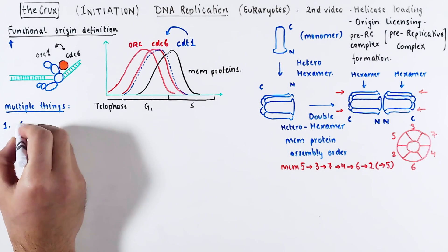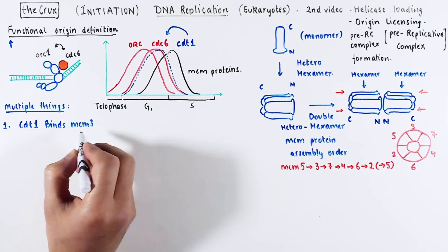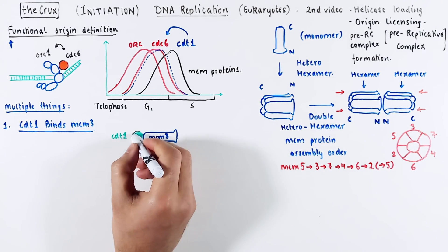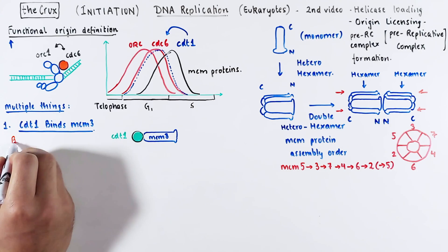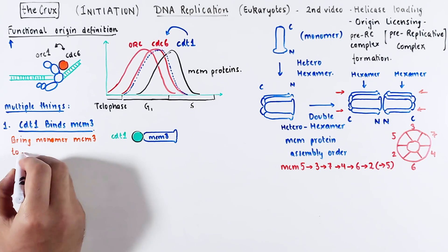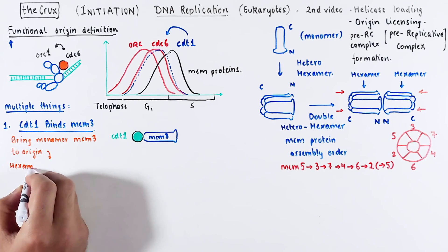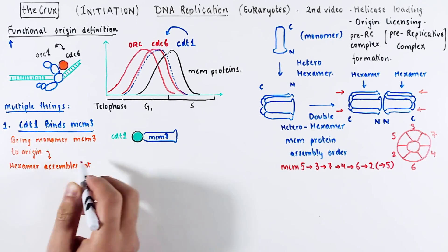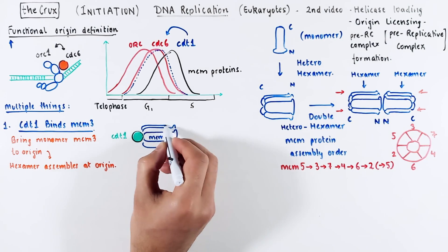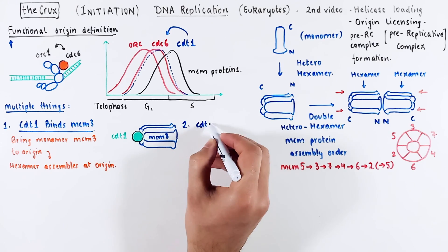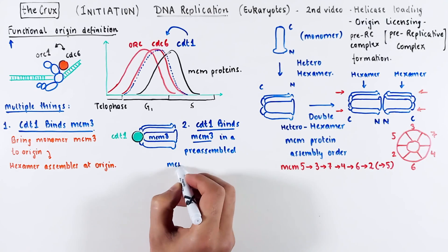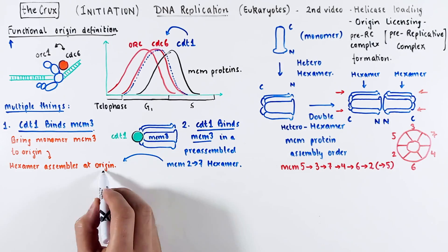Now that we have this information and we have defined the origin, there are multiple things to consider in helicase loading. Number 1, the CDT-1 protein binds MCM-3 monomers in the helicase. So, that perspective can take the monomer MCM-3 to the orc CDC-6 containing origin. And then the hexamer can assemble at that origin. Alternatively, you can have CDT-1 bind a preformed hexamer through the MCM-3 protein. And now instead, the entire hexamer is brought and loaded at the origin.